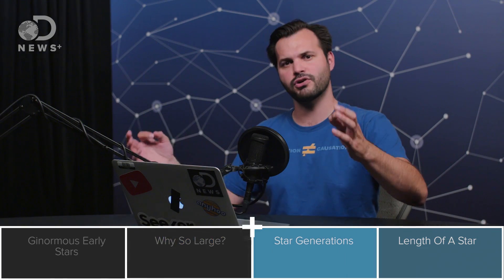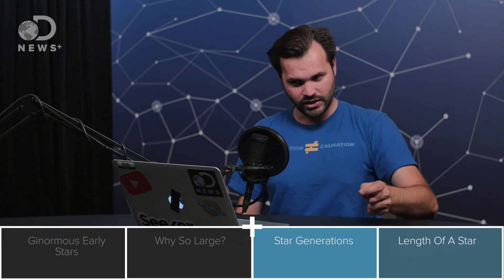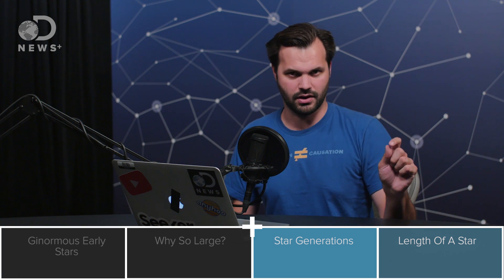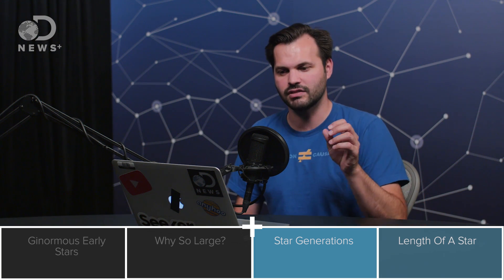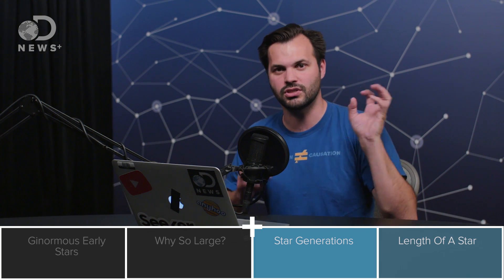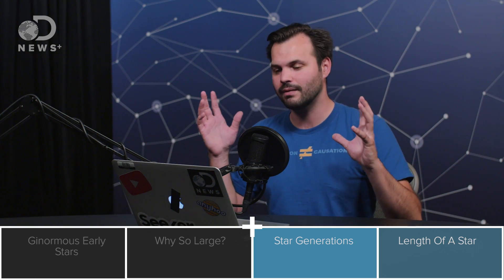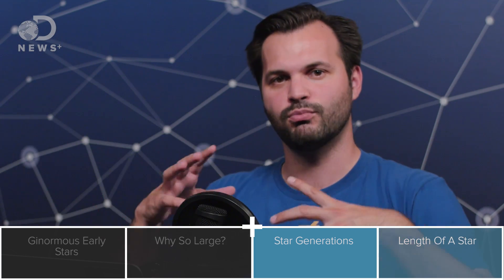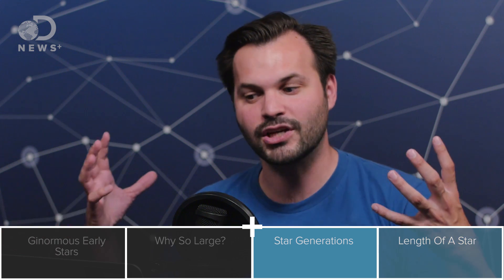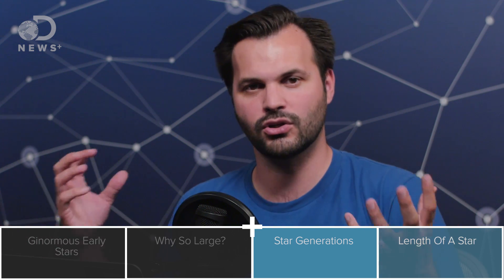In the early universe, the first generation of stars, today we call population three stars. Astronomers believe these lived very short, violent lives, lasting only about a million years until they exploded into supernovas or supernovae. And in that short million years, the heavier elements that you needed to make the stars that we have today were actually created in their cores.